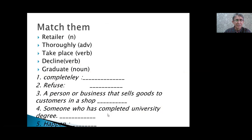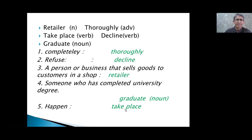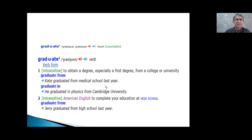Now let's study some vocabulary. Please match them: retailer, thoroughly, take place, decline, graduate. 'Graduate' as a noun means someone who completes their degree — someone who graduates from university or high school. Let's point out 'graduate' as a noun versus 'graduate' as a verb.